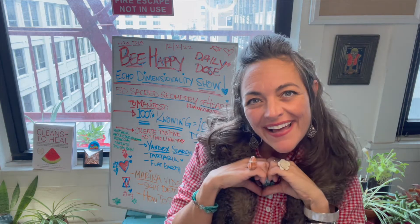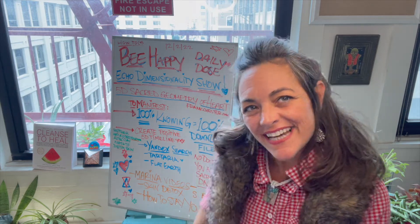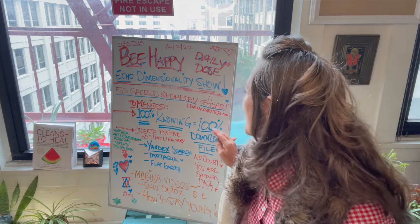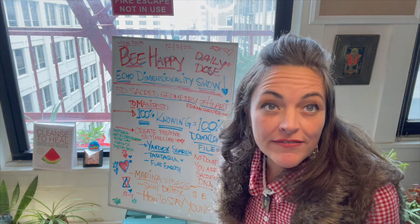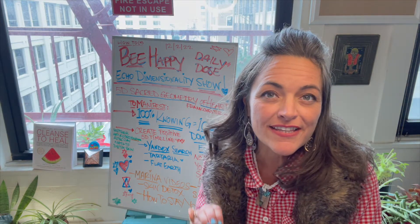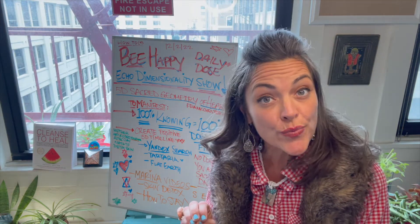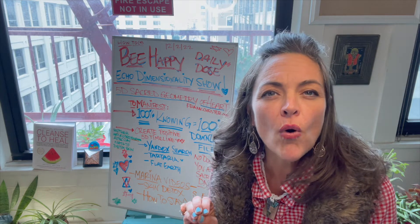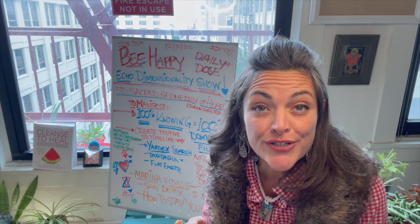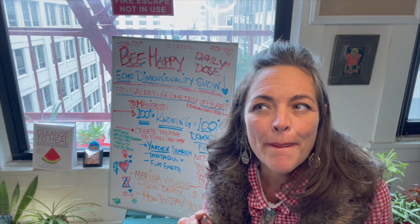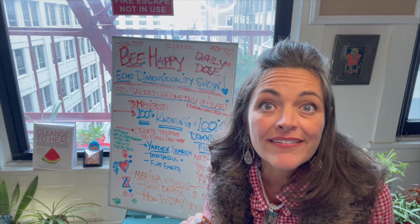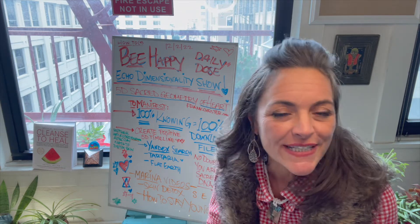Hi, welcome back to the Be Happy Echo Dimensionality show. We're talking about 5D heart structure again. To manifest these 5D heart structure realities, check out the Quantum Manifestation Series on the Harmonic Reactor channel on YouTube — Marina Jacoby, episodes one through five, season one. It'll help, trust me, it'll explain a lot.